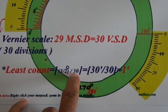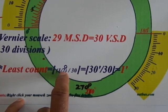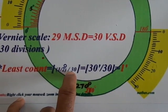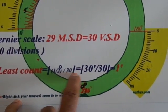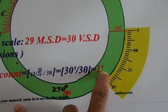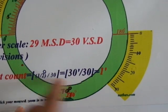So while finding the least count, half a degree value of one main scale division divided by number of vernier scale divisions. That is 30 minutes divided by 30, which equals one minute. This is the least count.